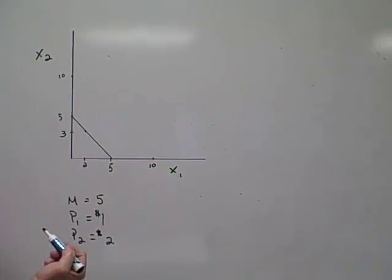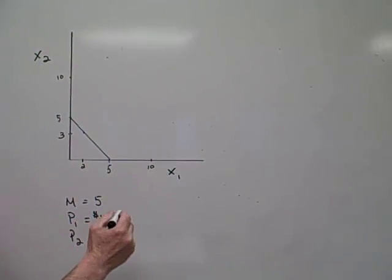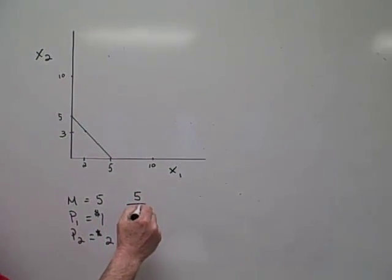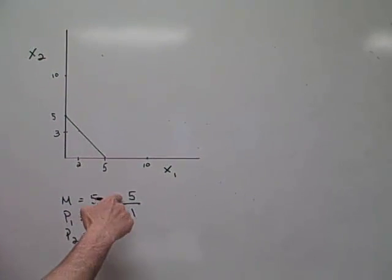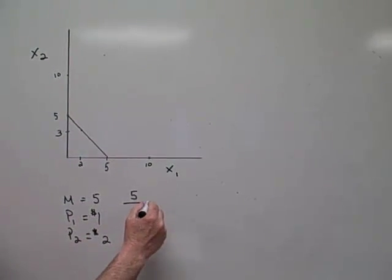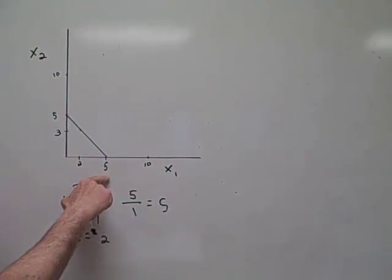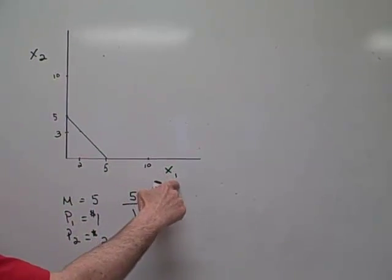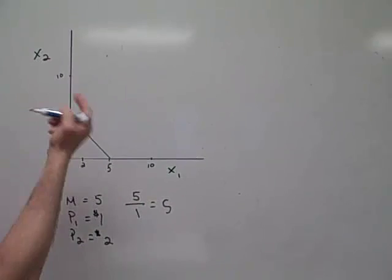So that would mean that if a person had $5 to spend, if I divided the income by the price, that person could buy 5 units of good X, or X1, and 5 units of X2.